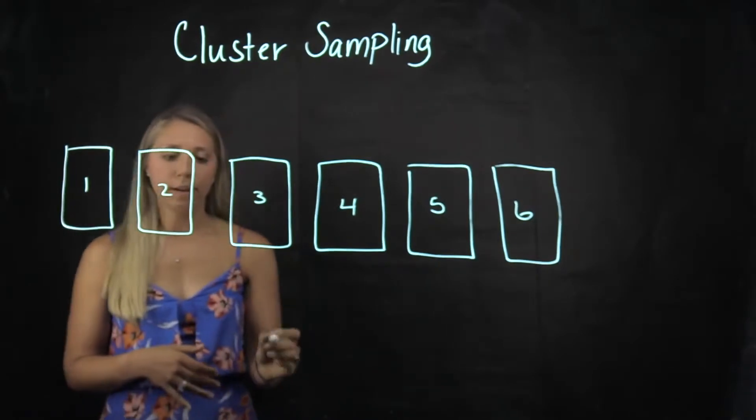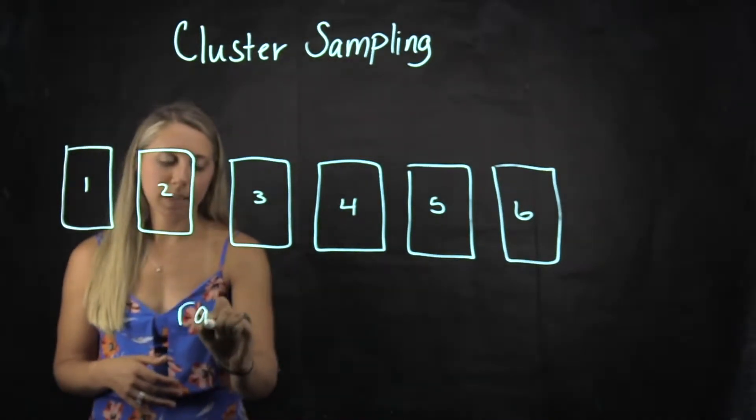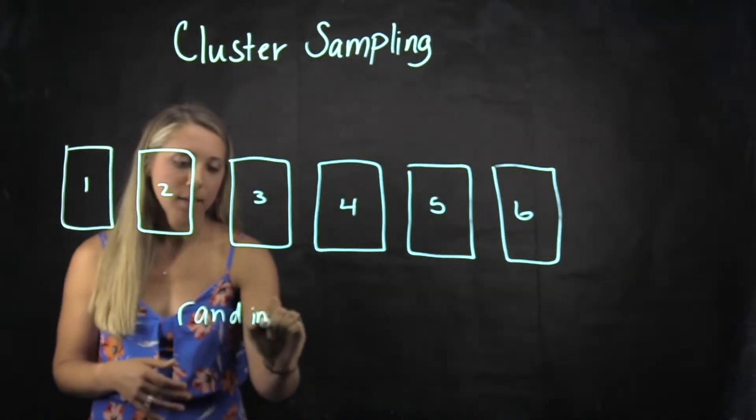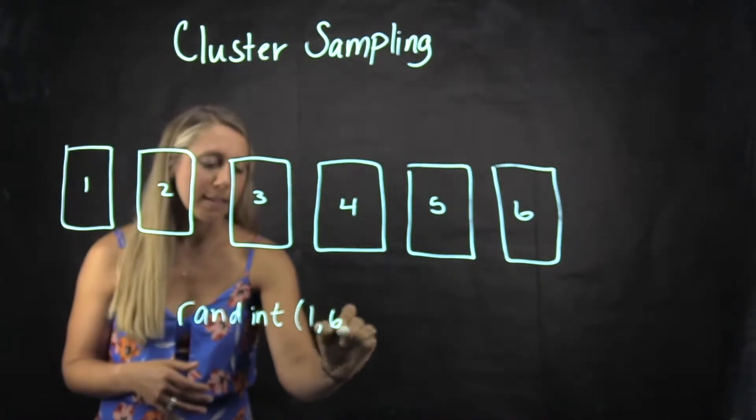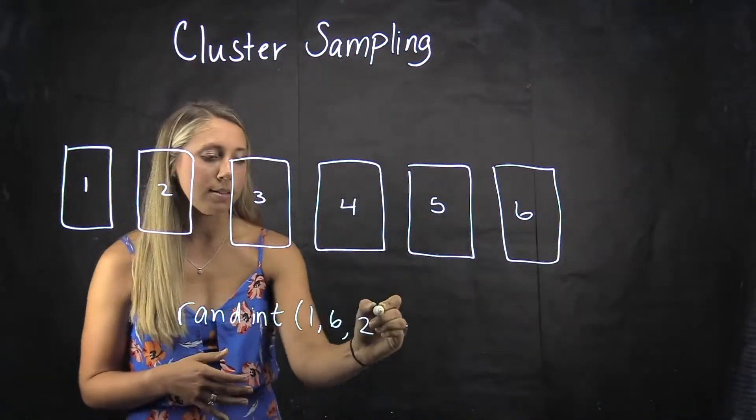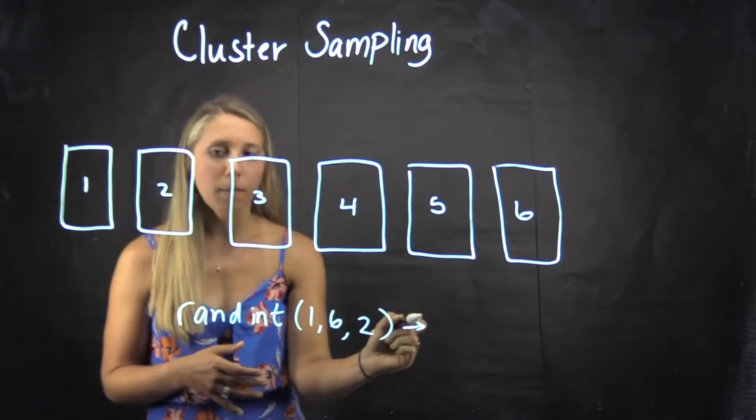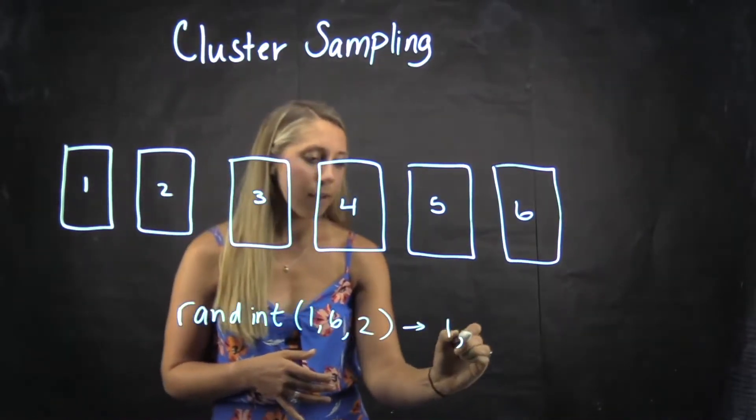So if I randomly pull out using ranint(1,6) and I want two of my clusters, let's say I get the numbers one and five.